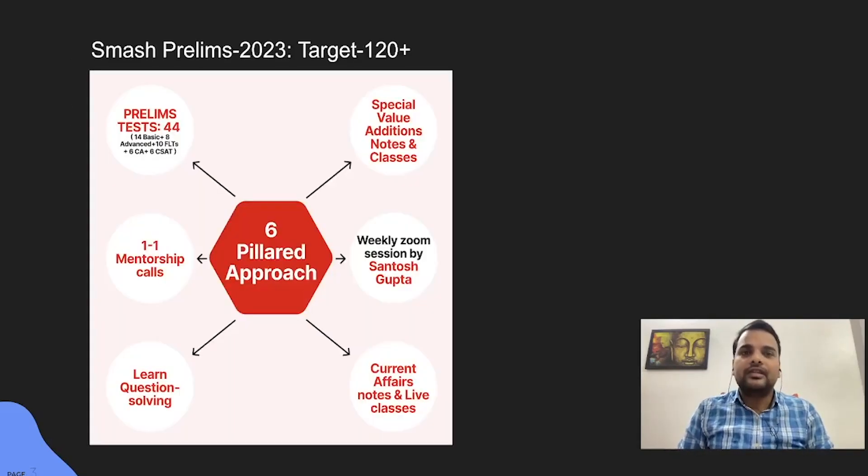Now let me briefly introduce SMASH prelims and the target is 120 plus in prelims. So what do you need? What is the actual need for the prelims? You need to revise. So we have a weekly revision plan ready for you as soon as you join and you will be monitored through it. Now again you have to give the mock tests also because everybody understands the need for it. So you have 44 mock tests, 14 basic tests, 8 advanced tests and full length test of full syllabus, 6 current affair tests covering the entire year of current affairs, then 6 CSAT tests also so that you do not flunk in CSAT.